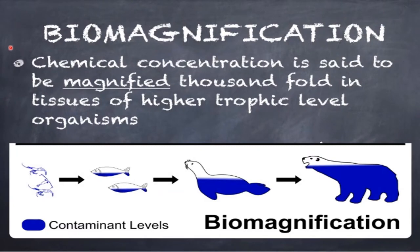These toxic heavy metals could lead to biomagnification, meaning chemical concentration is magnified thousandfold in the tissues of higher trophic level organisms. Compared to smaller organisms, biomagnification is greater in higher trophic level organisms — that is why it is called biomagnification.